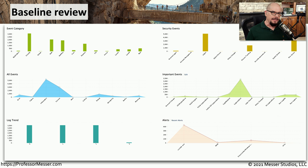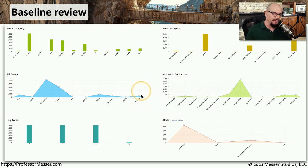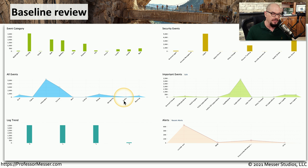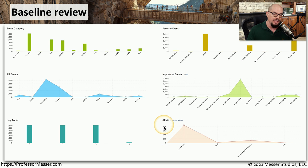If you start collecting this information over time, you can begin to create a baseline of what may be expected. For example, you may create an all-events baseline that shows the number of information events coming through during the day versus debug or notice events. This can be used to look at event categories, security events, important events, or other types of metrics on your network.